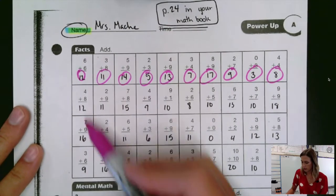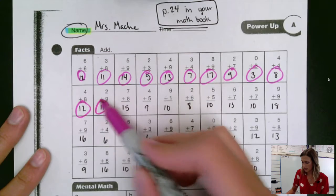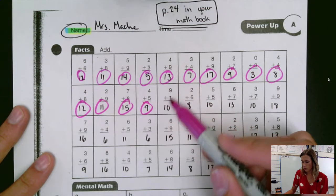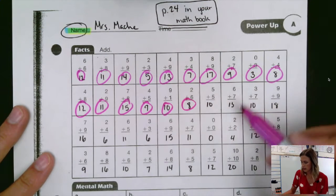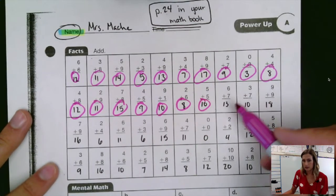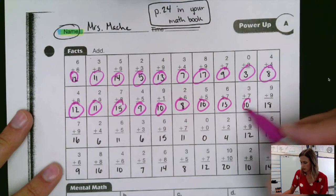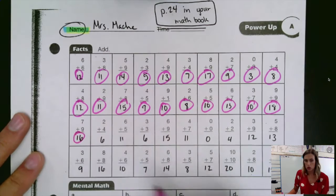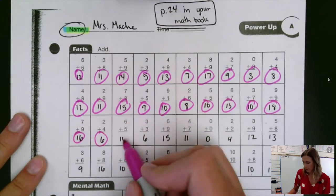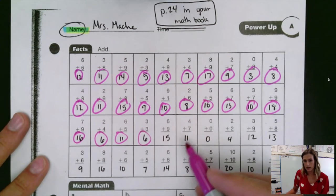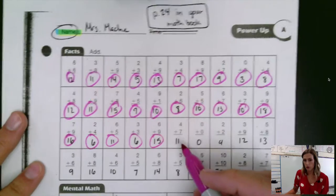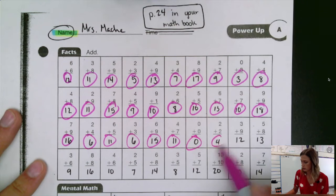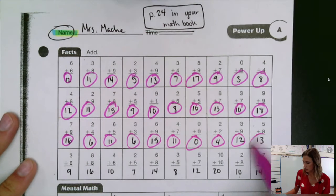Next row. Four plus eight is twelve. Two plus nine is eleven. Seven plus eight is fifteen. Four plus five is nine. Nine plus one is ten. Two plus six is eight. Five plus five is ten. Six plus seven is thirteen. Three plus seven is ten. Nine plus nine is eighteen. Next row. Seven plus nine is sixteen. Two plus four is six. Six plus five is eleven. Three plus three is six. Six plus nine is fifteen. Four plus seven is eleven. Zero plus zero is zero. Two plus two is four. Three plus nine is twelve. Five plus eight is thirteen.